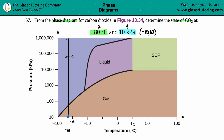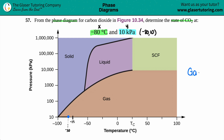Since we're all the way down at the bottom and we're in the brown region, that's the gas phase. So carbon dioxide at negative 80 degrees Celsius and 10 kilopascals is going to be a gas. That's the answer.